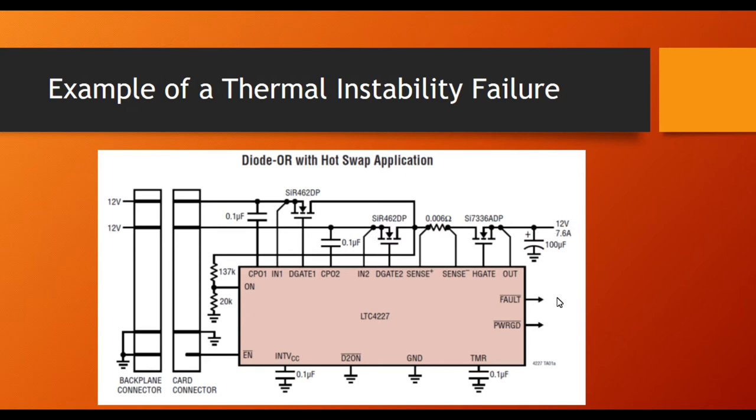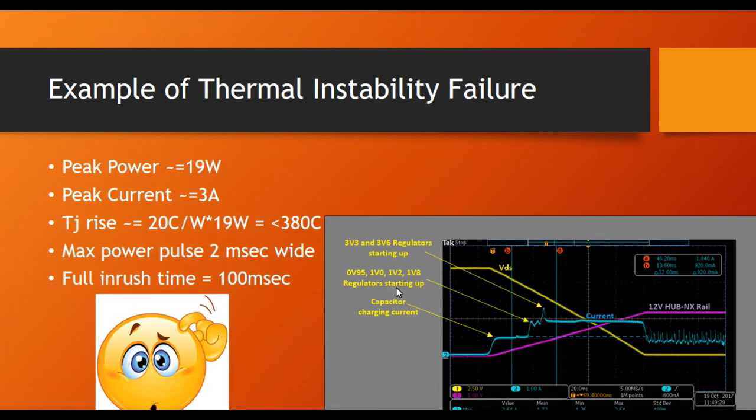So what can happen is if you do not choose these devices correctly you can run into the Spirito zone and cause a failure to occur through the thermal runaway. In this particular application, we had DC DC converters running in the background as soon as the voltage had reached a certain value, which added additional current loading on top of the charge current.